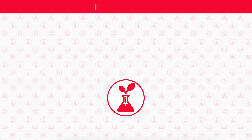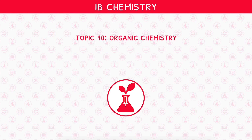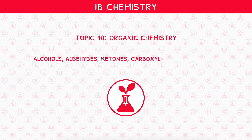Welcome back to our IB Chemistry video series. This is the fourth and final video in IB Chemistry Topic 10, Organic Chemistry, where we will be looking at alcohols, aldehydes, ketones, carboxylic acids, and benzene.